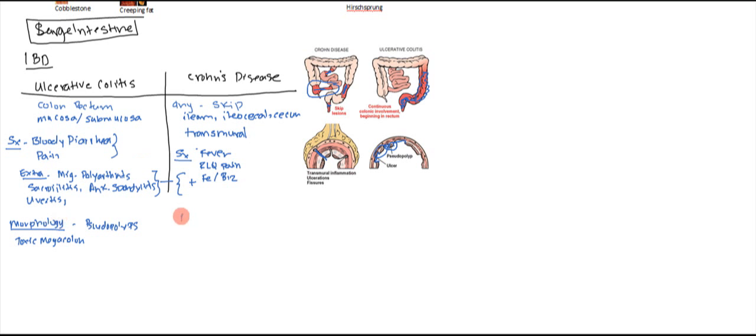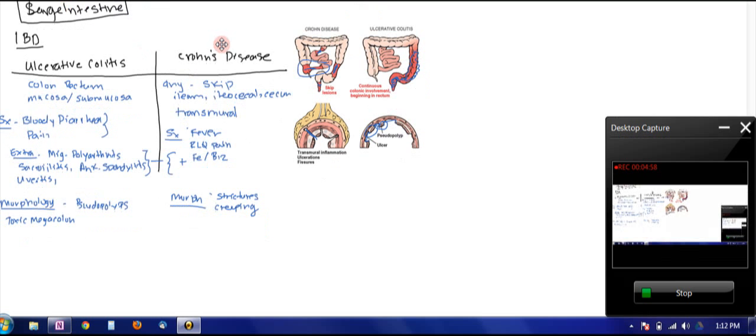Whereas here, morphologically you can get strictures as we've already talked about, and you can see right here the strictures. Then you can get creeping fat where the fat from the mesentery actually starts creeping upwards, and I can show that really nicely with this.